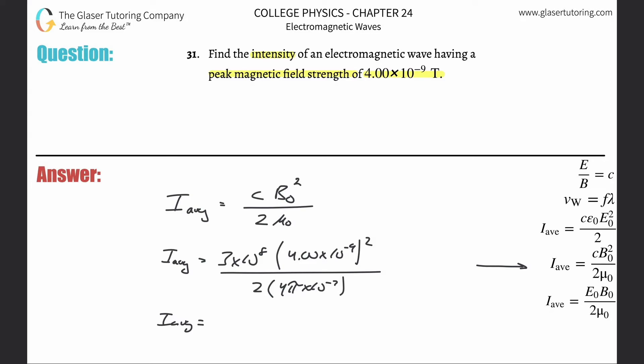And let's see what we get. Three times 10 to the eighth times four times 10 to the minus ninth squared, divided by parenthesis two times 4π times then 10 to the minus seventh.